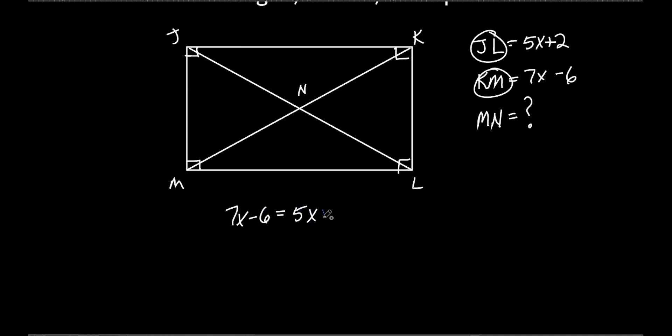So this is what we do. Let's do the math real quick. Subtract 5x from both sides. I get 2x. Add 6 to both sides. I get 8. Divide both sides by 2. I get 4.